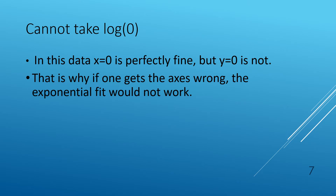Recall that you cannot take the logarithm of zero or a negative number. Here we are taking the log of the y data but not of the x data, so one of our x points was in fact zero and that is perfectly fine. It's the y's which are not allowed to have zero or negative numbers — that's why if one gets the axes backwards, an exponential fit would not work, either here in R or in Excel, for the same reason. In R it's explicit with the log function; in Excel it's behind the scenes and implied, but it's still the same log.